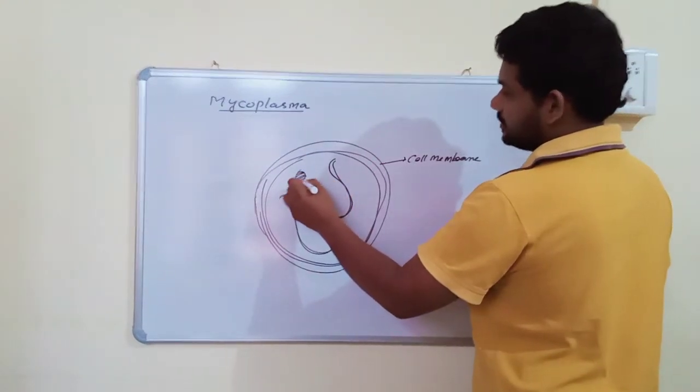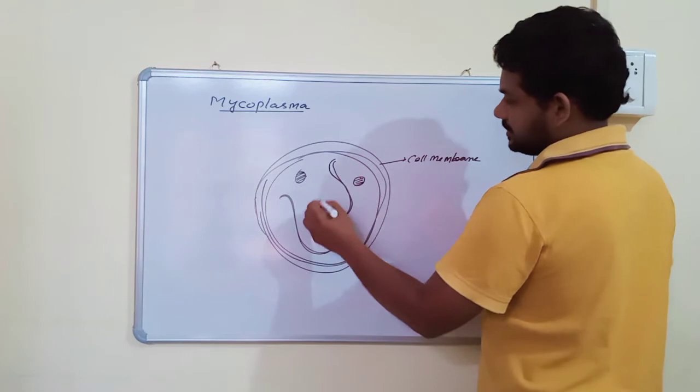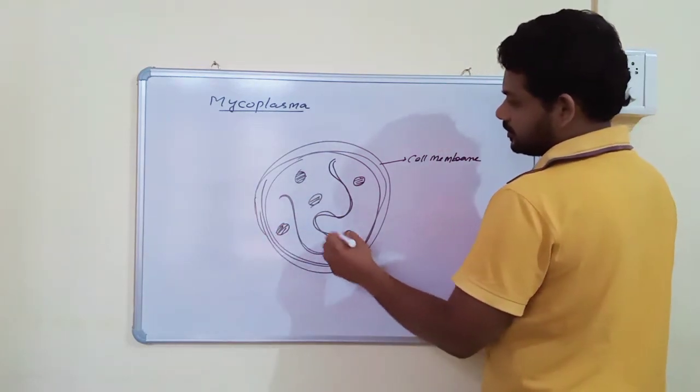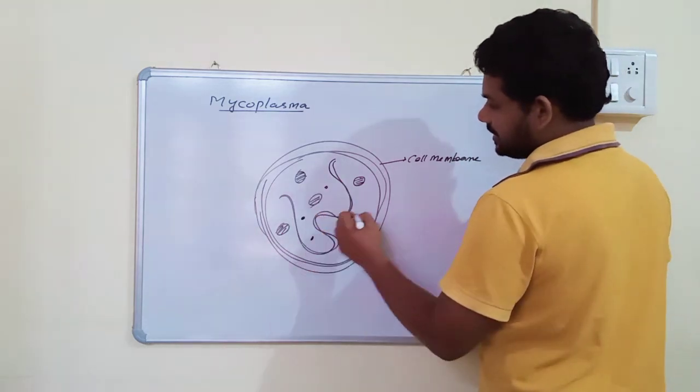In the protoplasm there are some important structures. They are called elementary bodies. In mycoplasma reproduction by means of elementary bodies.